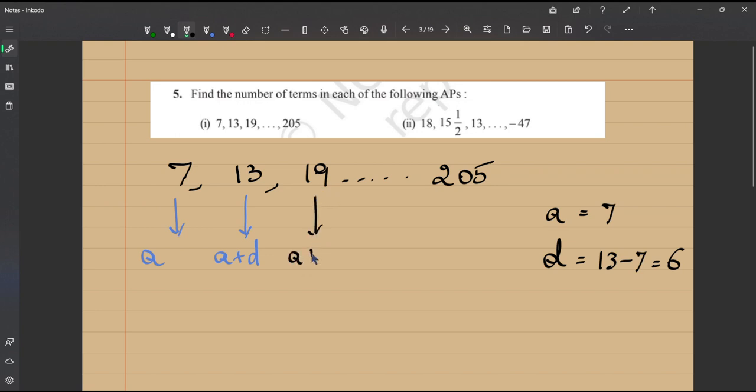This is A plus 2D, right? The third term is A plus 2D, this was A plus 1D, this was A plus 0D.